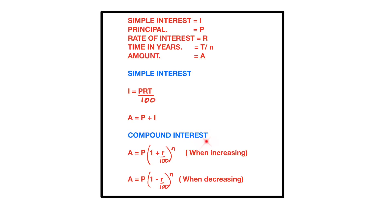For compound interest we use the formula: A = P(1 + R/100)^N. P is the principal, R is the rate of interest, and N is time in years. When the amount is increasing this is the formula we use. When it is decreasing we put a minus here.